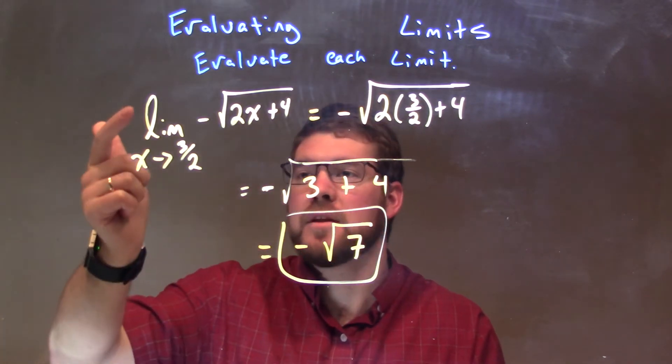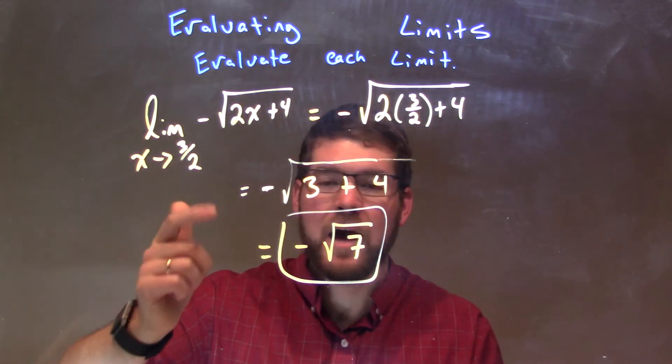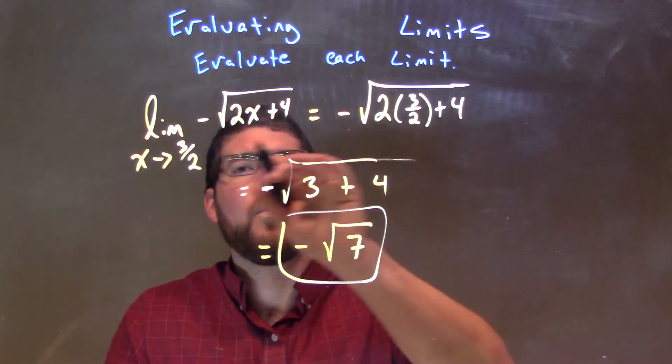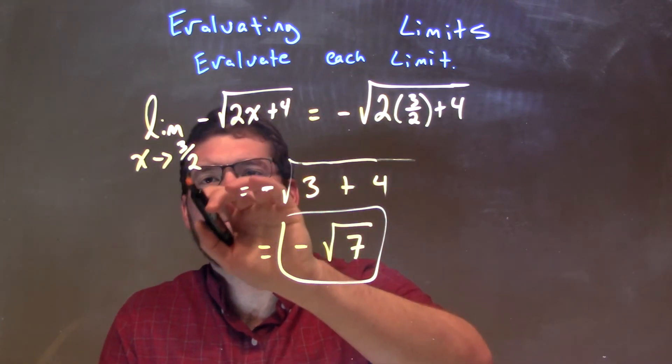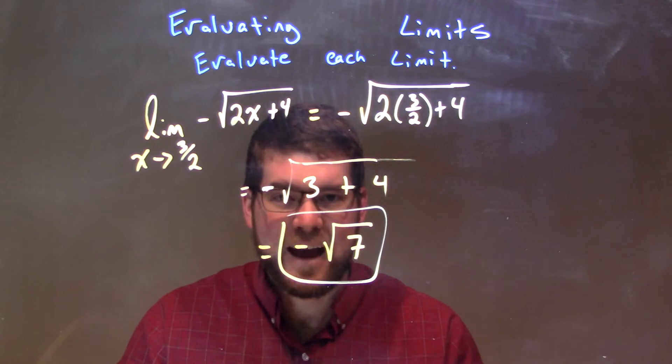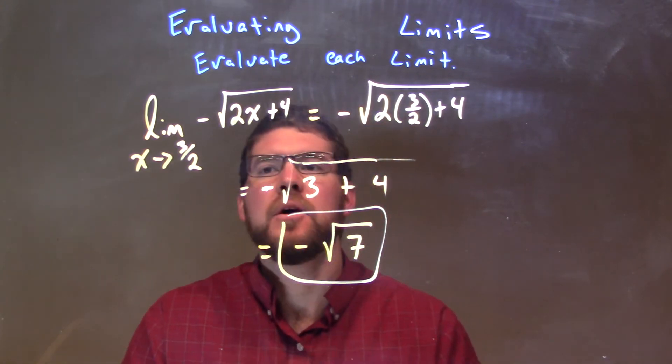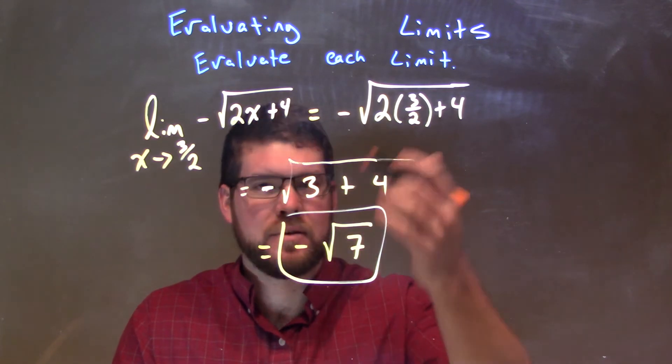Let's recap. We're getting the limit as x approaches 3/2 of negative square root of 2x plus 4. Since this is a root function here, we can plug directly 3/2 in for x, and we can take a limit wherever it exists. Well, it exists at 3/2. It's continuous there.